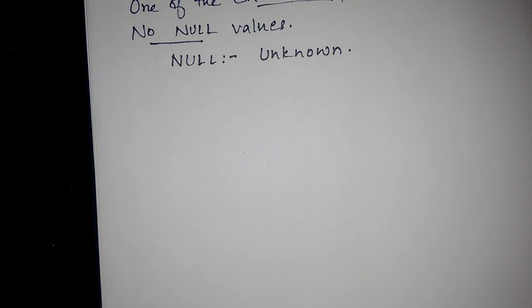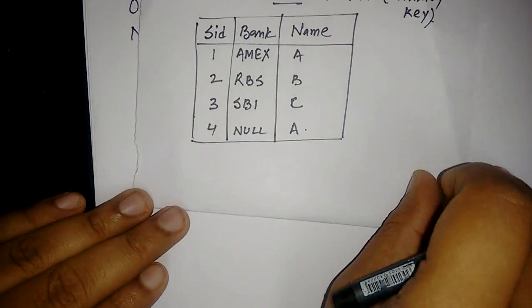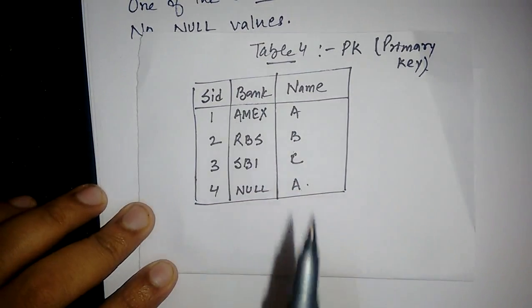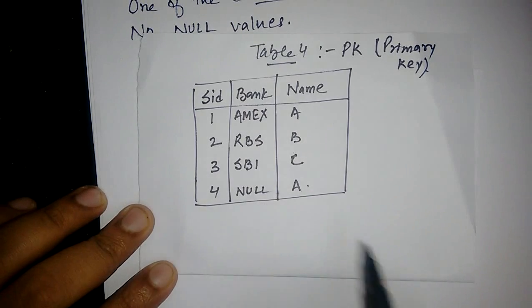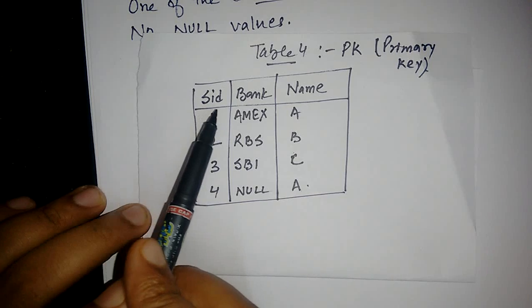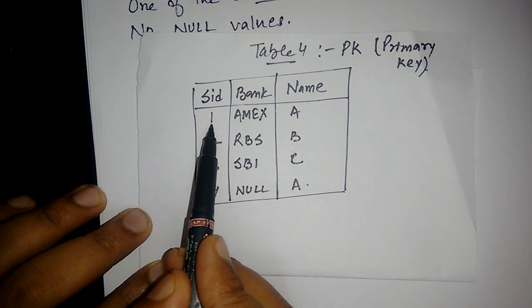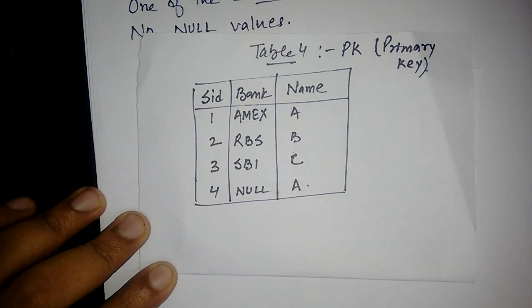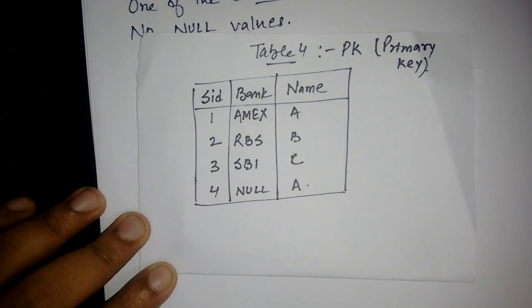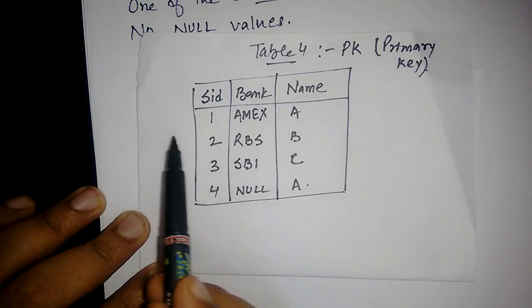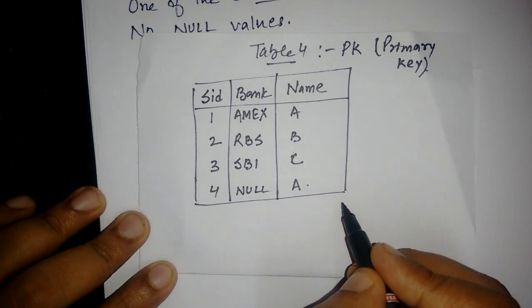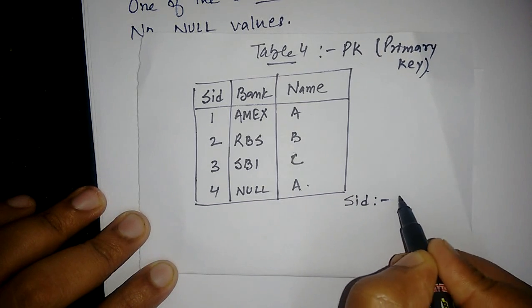Let us take an example for primary key. Consider table 4, which has three attributes and four tuples. We can clearly see that SID has the entries 1, 2, 3 and 4. All the entries in this column are unique, and we are able to recognize each tuple separately with the help of entries of SID alone. Hence, SID is the candidate key.